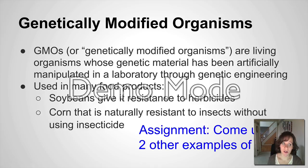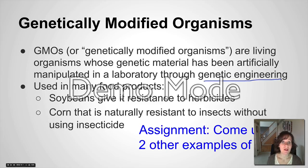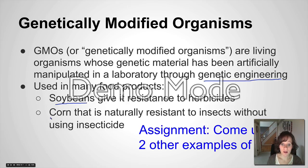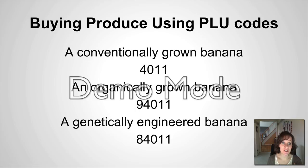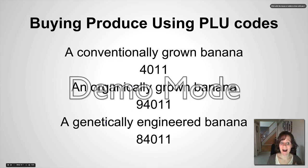A little bit on genetically modified organisms, or GMOs. These are living organisms — such as produce you might find in the store — whose genetic material has been artificially manipulated through genetic engineering, possibly using a plasmid. They're created to make food look better, shinier, or taste better. Some examples: soybeans are given resistance to herbicides so they grow better, and corn is made naturally resistant to insects without using insecticides. Come up with two other examples of GMOs as another assignment. Interesting fact: when you go to the store and see PLU codes on your produce, a conventionally grown banana has one PLU, an organic one has another, and a genetically engineered banana has a different PLU code.